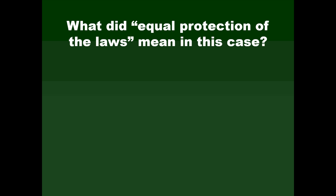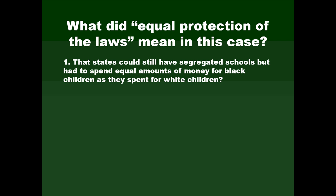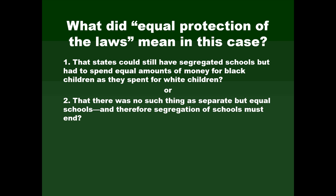One of the central questions of the case is what 'equal protection' meant when applied to public schools. The interpretation of those who supported segregation was that it simply meant schools would have to spend equal amounts of money for Black children as for white children — that was not happening, but they were willing to do that if they could avoid integration. The other position was that there was no such thing as separate but equal schools, and therefore segregation of schools must end. This second position was the one that Marshall ended up taking.